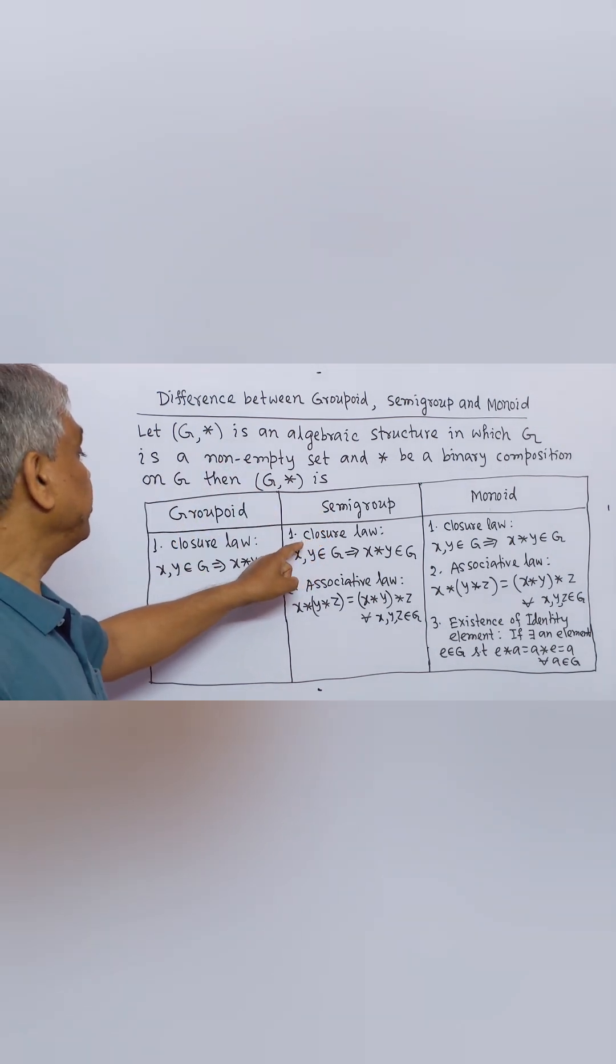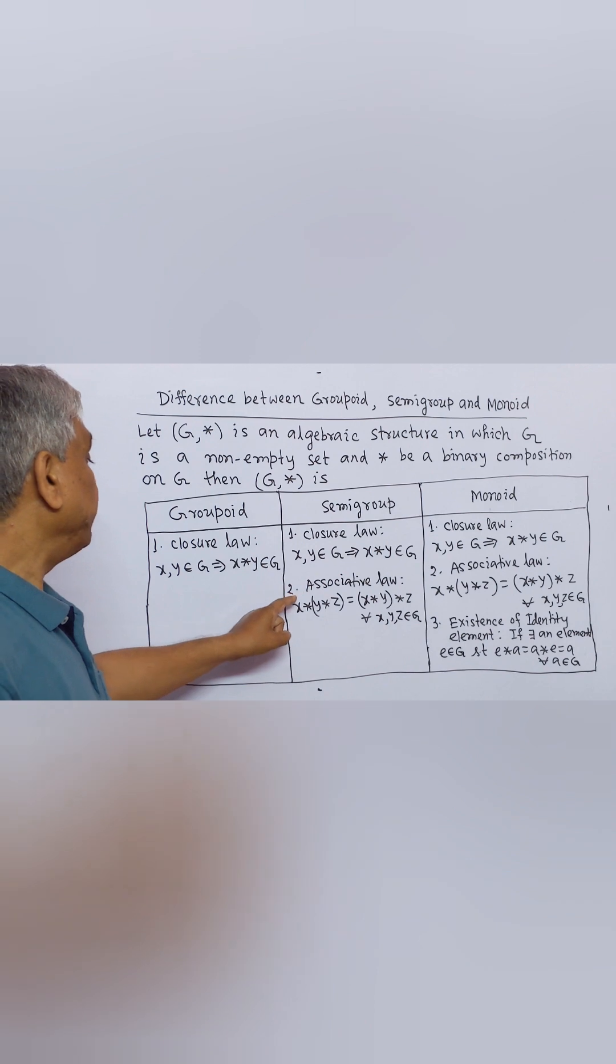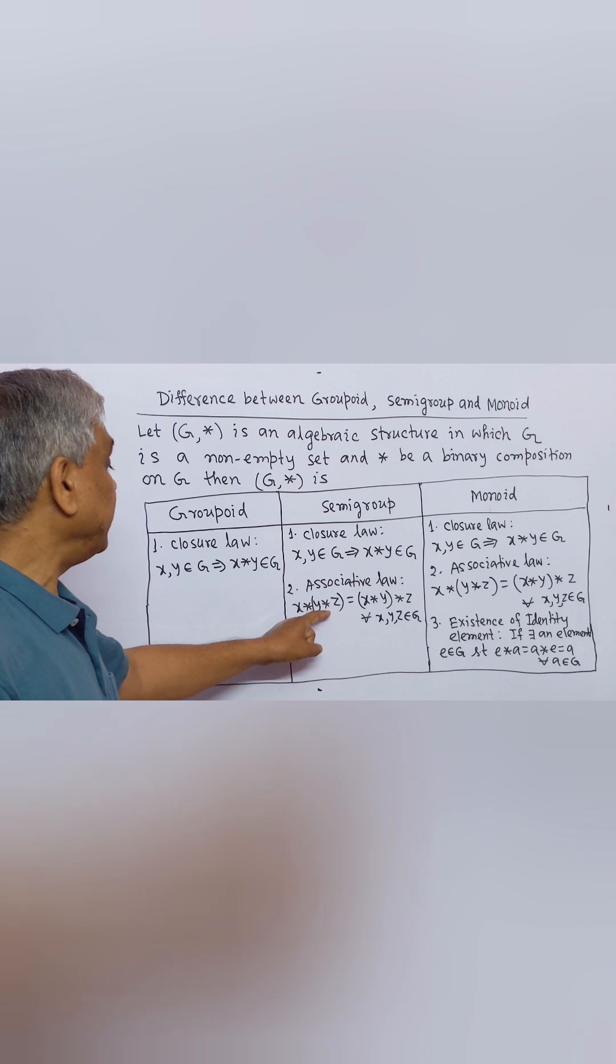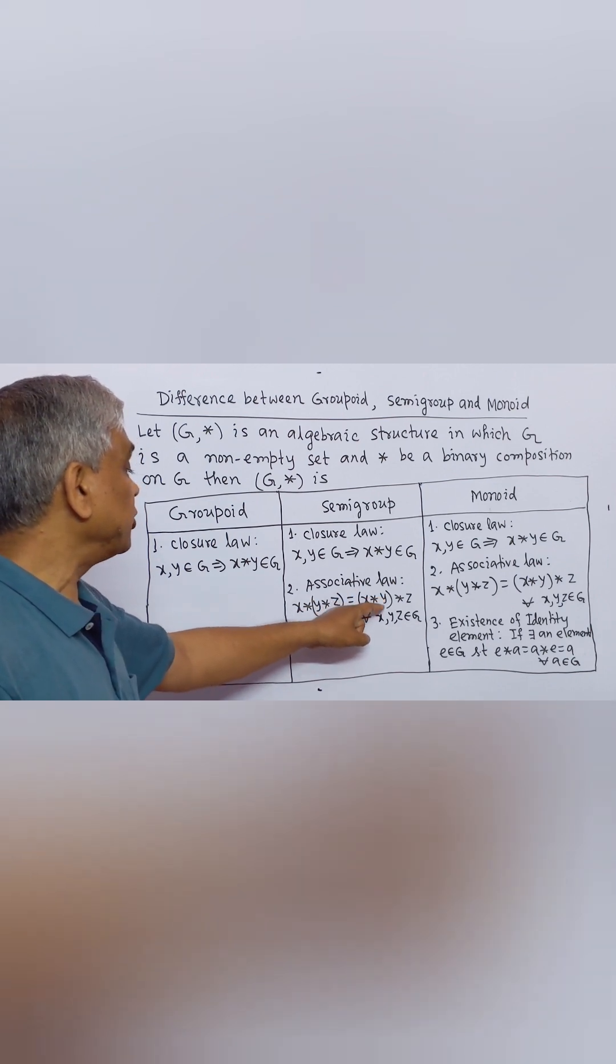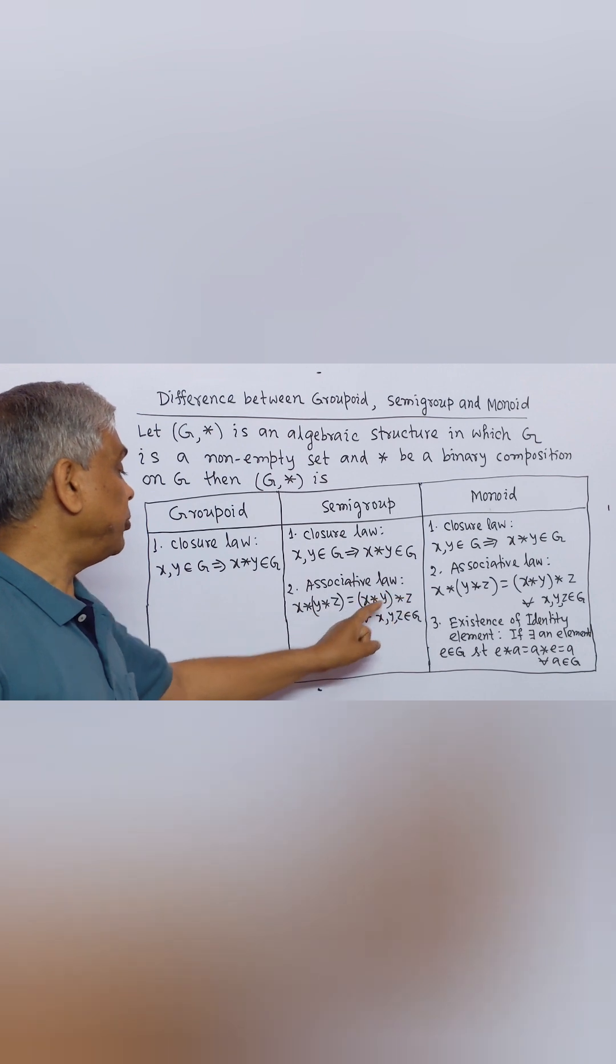Semi-group if it fulfills closure law. Number two, associative law: X binary composition under bracket Y binary composition Z equal to under bracket X binary composition Y binary composition Z for all X, Y, Z belong to G.